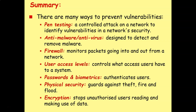In summary, there are many ways we can detect and prevent vulnerabilities in networks. Pen testing is a controlled attack on a network to identify vulnerabilities in network security. Anti-malware or anti-virus software is designed to detect and remove malware. Firewalls monitor packets going into and out from a network. User access levels control what access users have to a system. Passwords, biometrics and two-factor authentication can help authenticate users. Physical security guards against theft, fire and flood. And encryption can stop unauthorized users from reading and making use of data if they should get access to it.